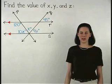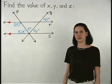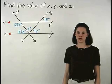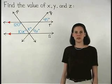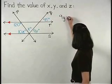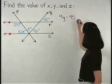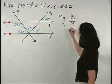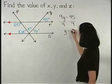Since we know that if two parallel lines are cut by a transversal, then corresponding angles are congruent, we can set up the equation 9y equals 45. And dividing both sides by 9, we find that y equals 5.